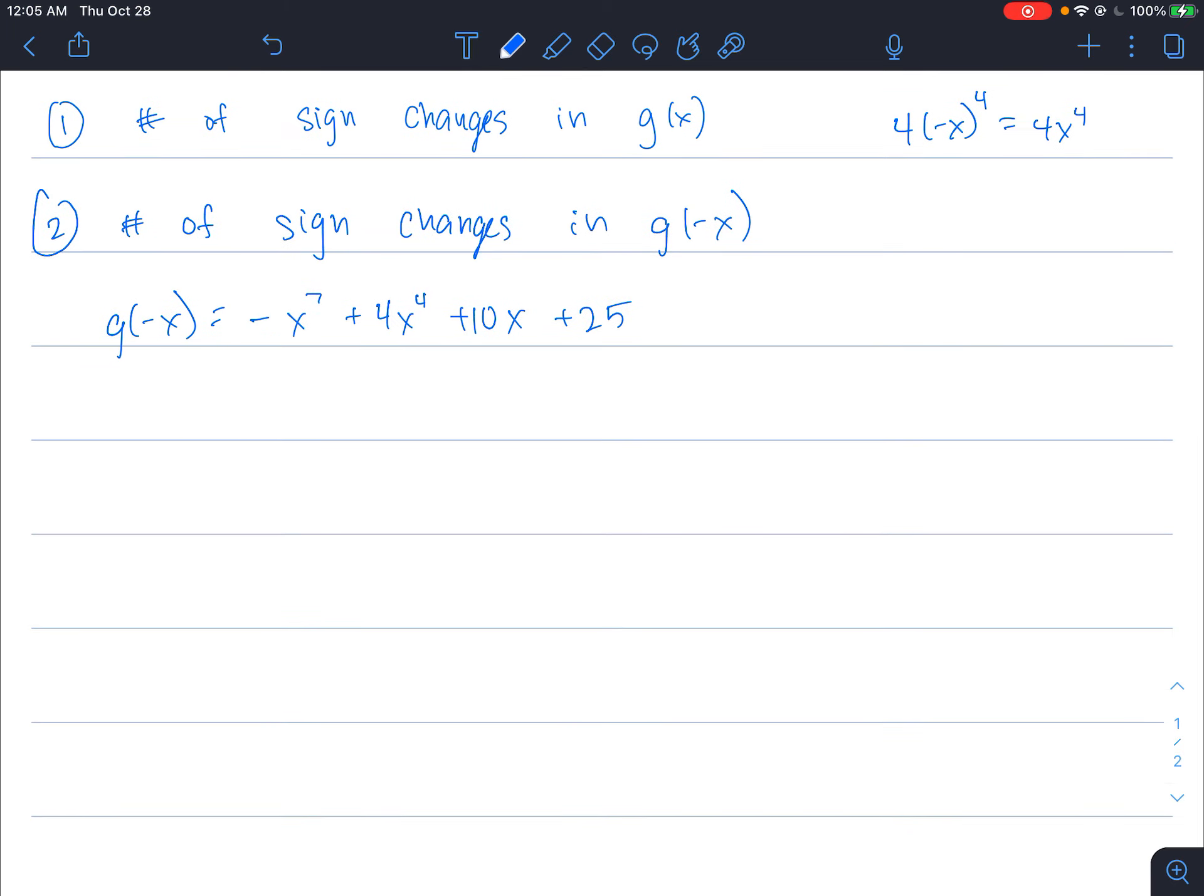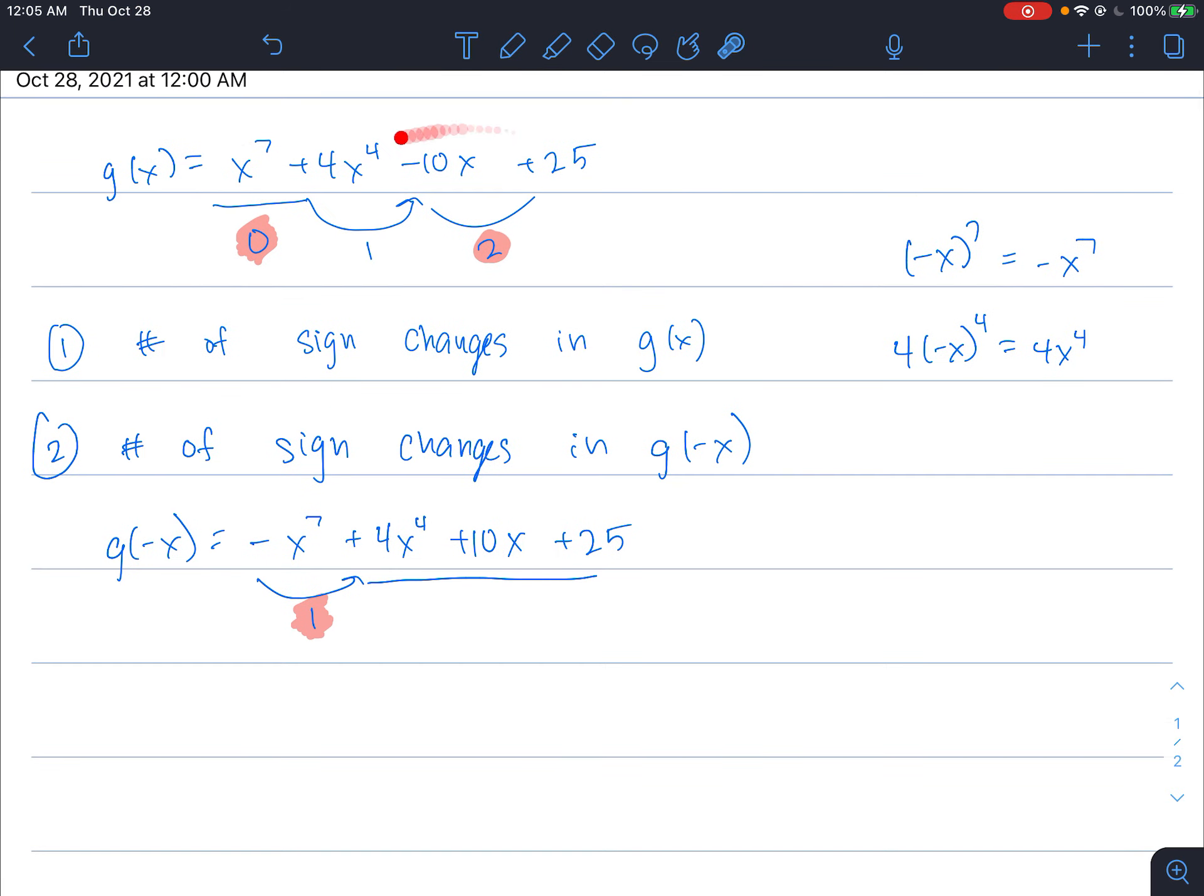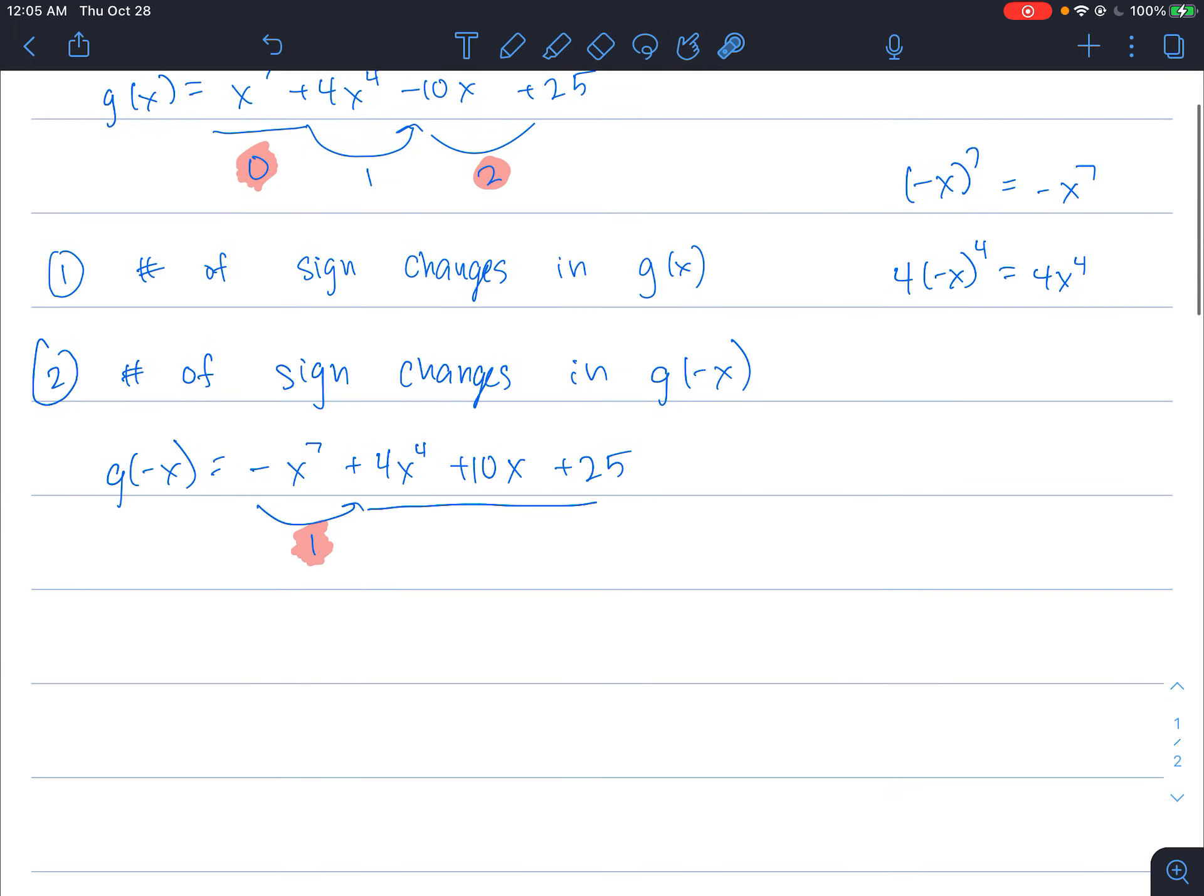Now I count the number of sign changes just like I did before. I go from negative, positive, that is one sign change. And then I don't change signs at all for the rest of it, so it stays positive. I'm going to either have one, but I can't have negative number of solutions, so we're just going to say 1. What this tells me is that this polynomial is going to have one negative solution, and only one negative solution. There's no other options.